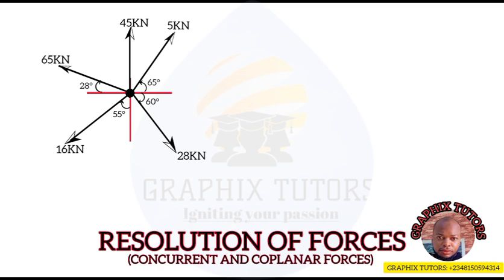For the 5 kilonewton force inclined at 65 degrees to the horizontal, it is acting between the vertical and horizontal lines — let's say north and east. The arrow is going outward, so we put the arrow at both ends. For the vertical component we use sine, and for the horizontal component we use cosine, because the angle is joined to the horizontal. So the vertical gives us 5 sin 65 and the horizontal gives us 5 cos 65.